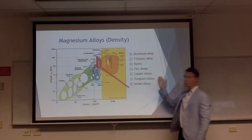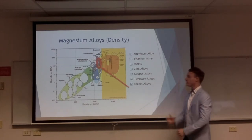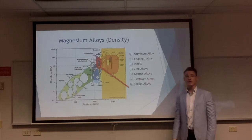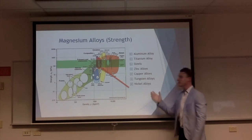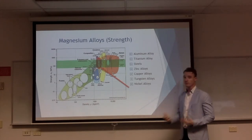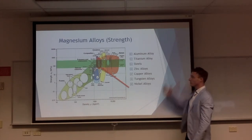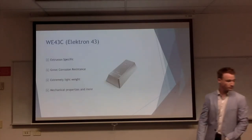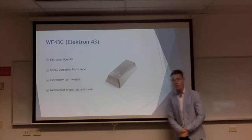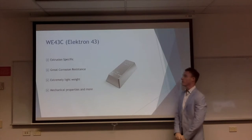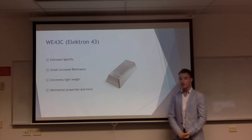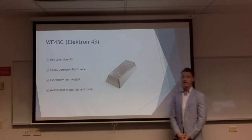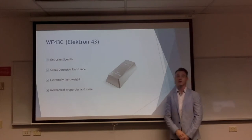Located here in yellow are all the alloys that magnesium outperforms in terms of density, so it is lighter than aluminium and titanium currently used in bicycle frames. In green are all the alloys that it performs similarly to, which also includes aluminium and titanium. Identified for the process of a bicycle frame is Electron 43. It is extrusion specific, has great corrosion resistance, is extremely lightweight — lighter than magnesium by itself — and has all the mechanical properties needed for a bicycle frame and more.